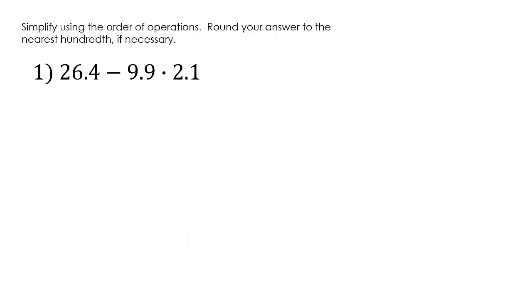Simplify using the order of operations. Round your answer to the nearest hundredth if necessary. So let's get started. Remember that orders of operations say that we have to do multiplication before addition and subtraction. So let's do that first. We're going to multiply these two together. Now remember when we multiply, we don't have to line up the decimals. But in this case, they just happen to line up, which is okay.